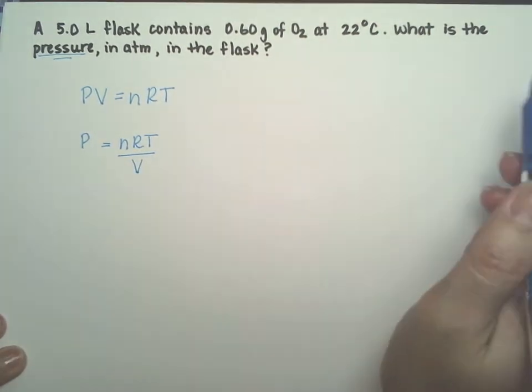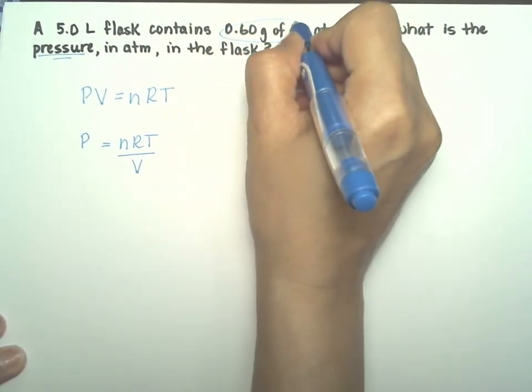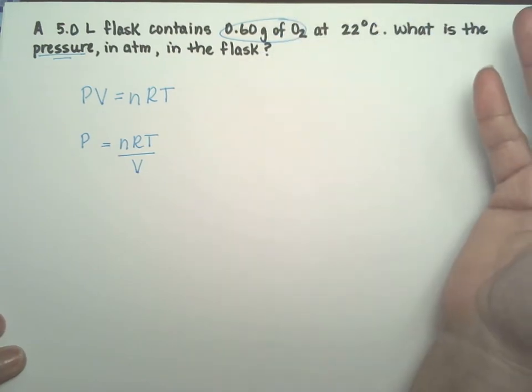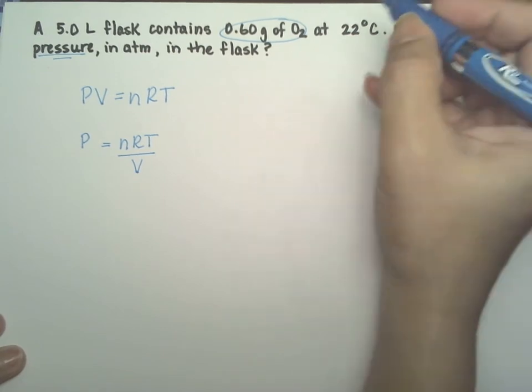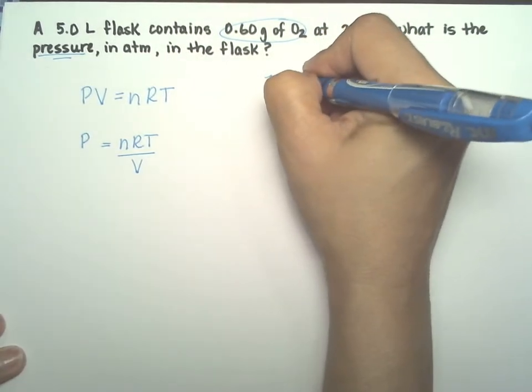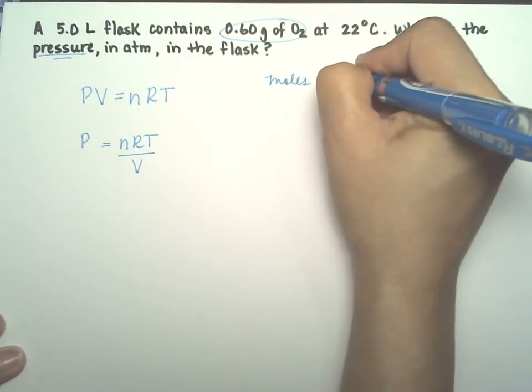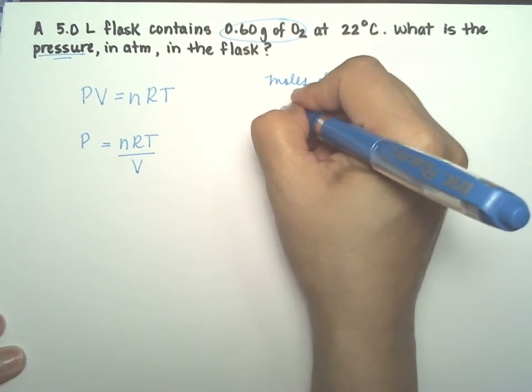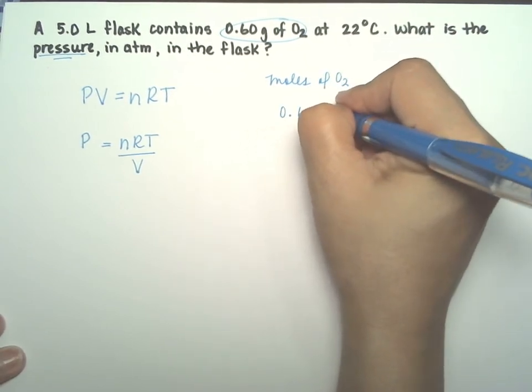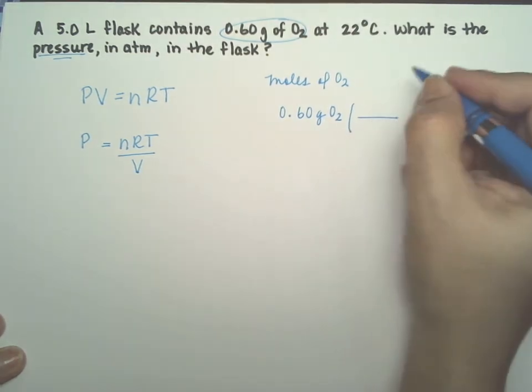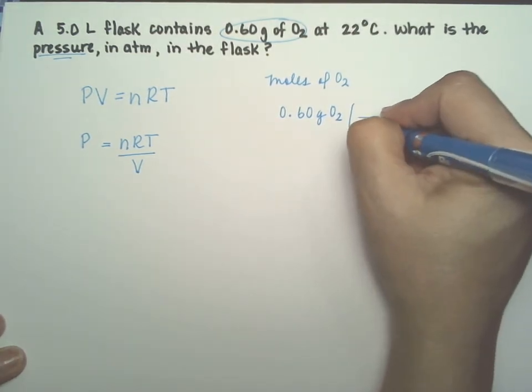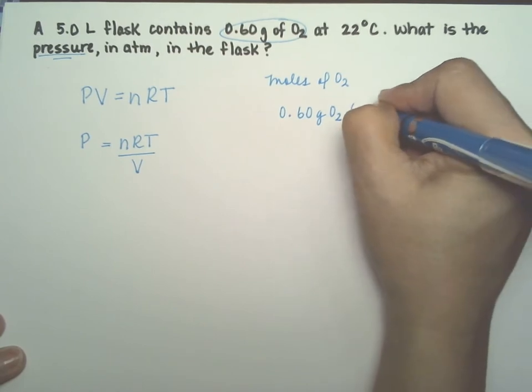We're ready, except for the fact that they give us grams of oxygen, and n is moles of oxygen. No problem. We're going to go ahead and calculate the moles of oxygen. So you have 0.60 grams of O2, and a mole of O2 is 32 grams per mole of O2.